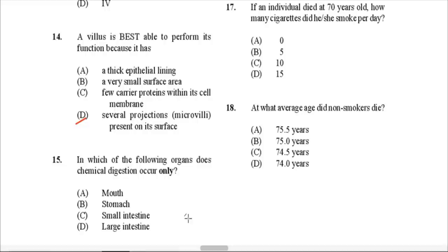Question 15: In which of the following organs does chemical digestion occur only? The mouth has both mechanical and chemical digestion — ruled out. The stomach similarly has both. The small intestine carries out only chemical digestion — the breakdown of large nutrients into smaller nutrients — with no mechanical digestion occurring. The large intestine can be ruled out because technically neither chemical nor mechanical digestion occurs there; only absorption of water and formation of stool. So C — the small intestine — is the correct answer.